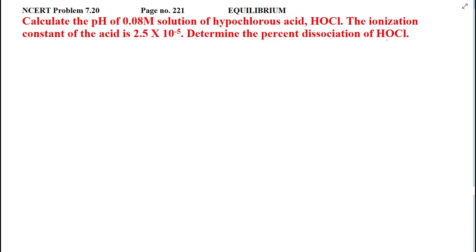Determine percentage dissociation of HOCl. So we have hypochlorous acid given. Concentration is 0.08 molar. The Ka value is 2.5 into 10 raise to power minus 5. First we are asked about pH, then the dissociation of hypochlorous acid — how much percent.